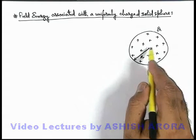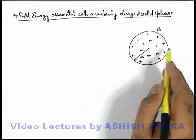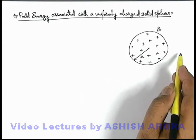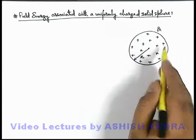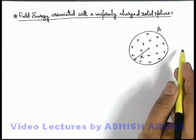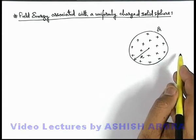And if we talk about the electric field configuration in the outer region of this sphere, which will be exactly same as that of the metal sphere because in outer region the electric field varies with the same expression as kQ/x².